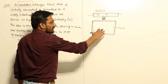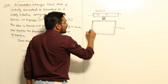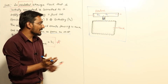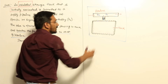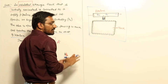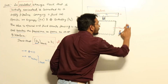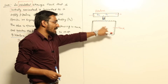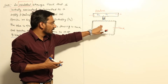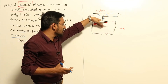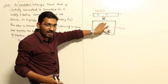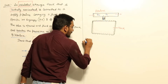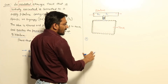This is an unsteady state problem because mass is accumulating inside the tank and changes with respect to time. Note that if we take the complete system as the control volume, it would be steady state since the total mass doesn't change. But since we are studying only the tank as the control volume, mass is changing — so it is unsteady state.